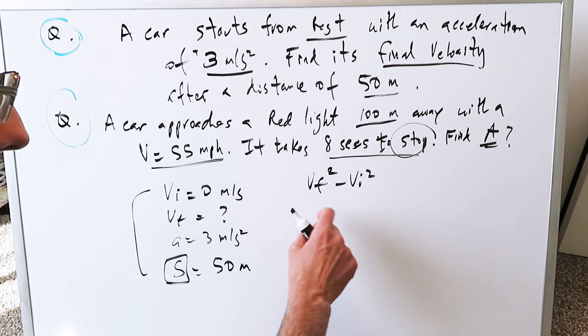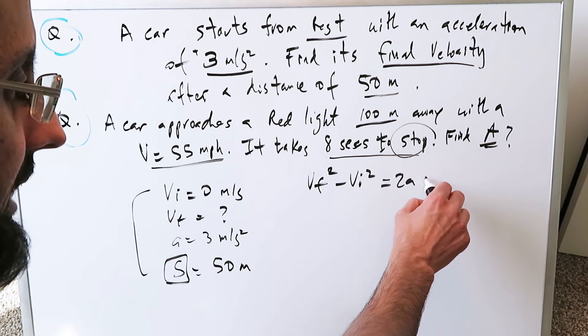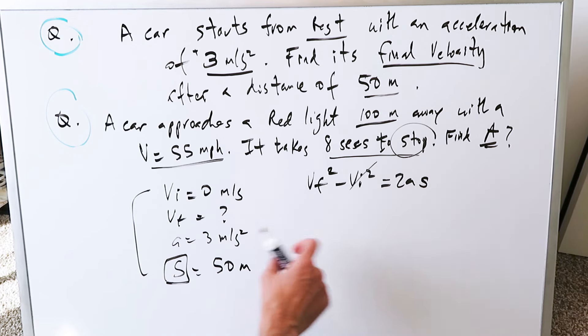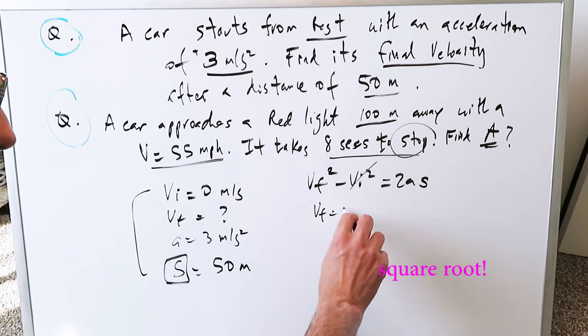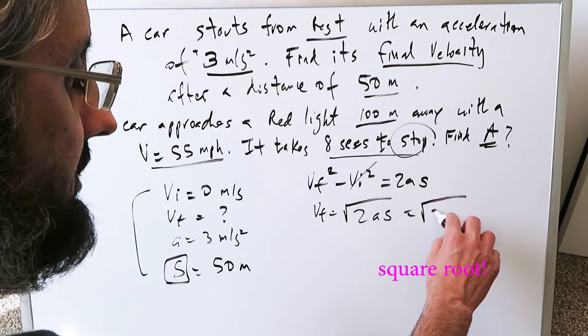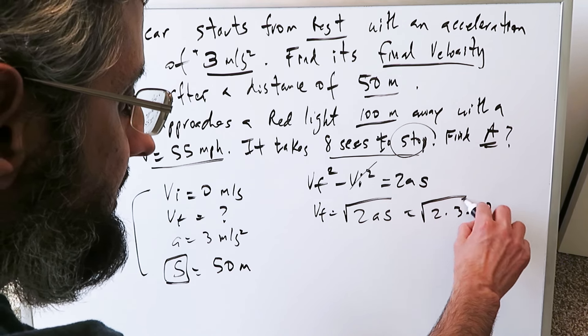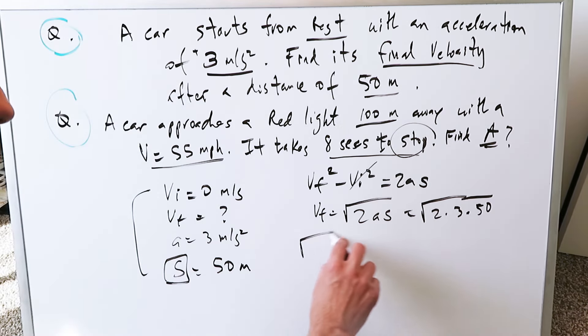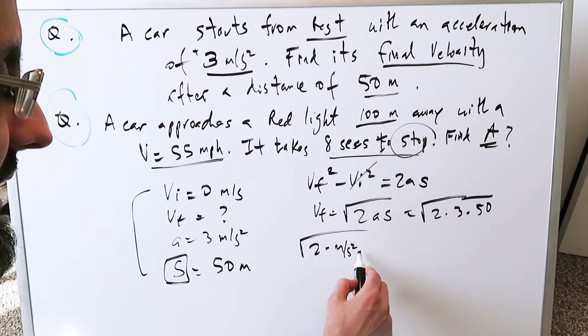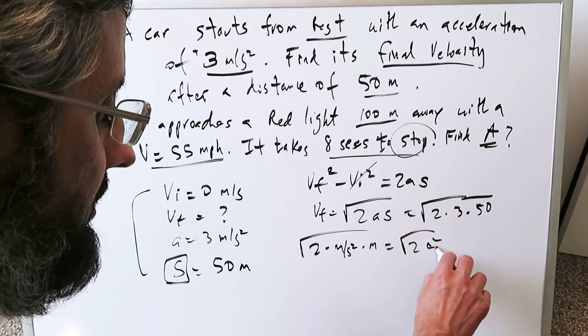Vf squared minus Vi squared, final velocity squared minus initial velocity squared, is equal to 2 times acceleration times position. But initial velocity is 0, and just calculating for Vf is easy. It's 2as. You know what the values are coming in here: 2 times acceleration, which is 3, times position, which is 50. You're looking at 2 times something in meters per second squared times something in meters. So you're looking at 2 times meters squared over seconds squared.